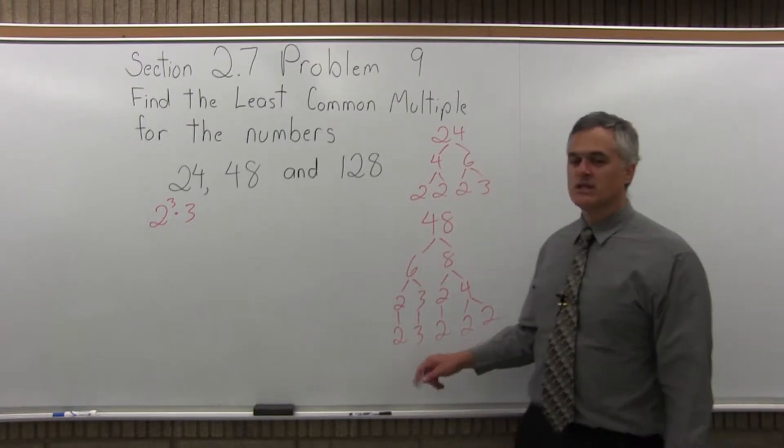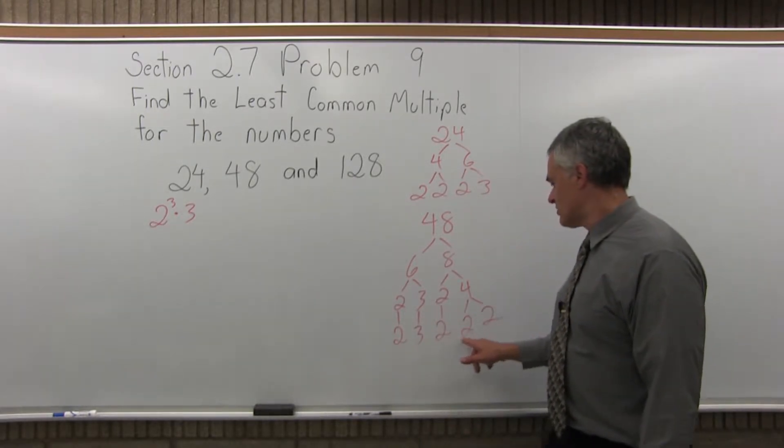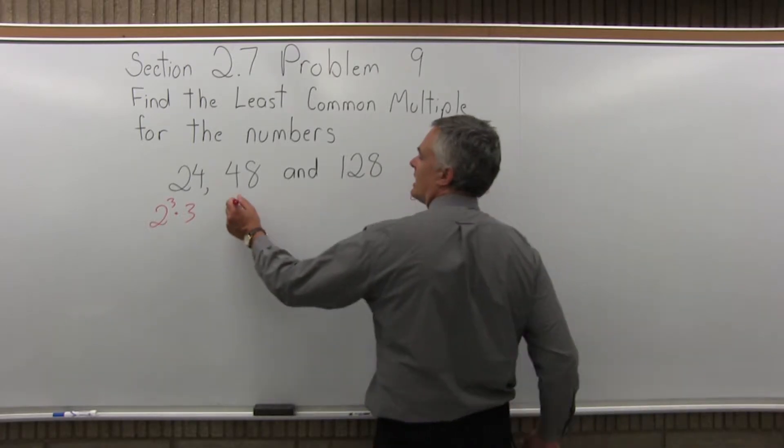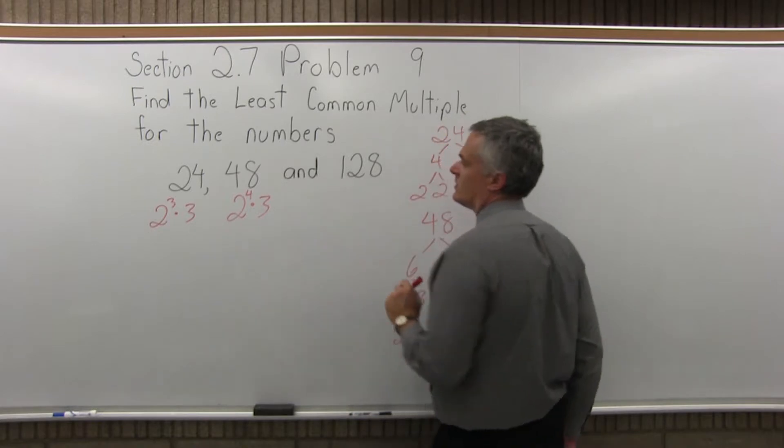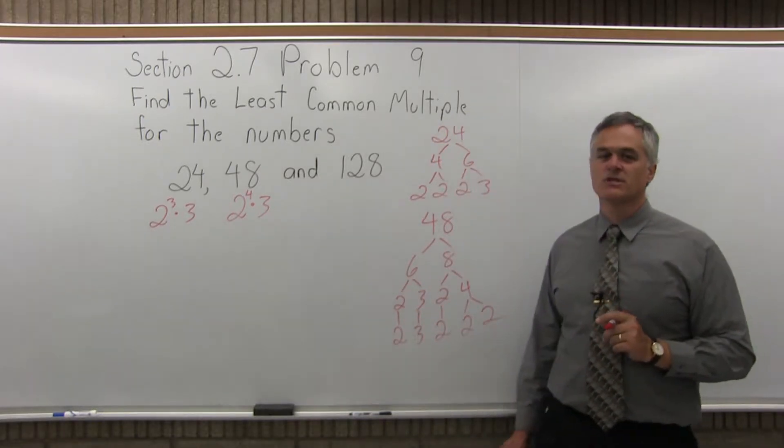Now everything is prime. I have one, two, three, four 2s, and a 3. So that would be 2 to the 4th power times 3 for 48. That's the prime factorization of 48.